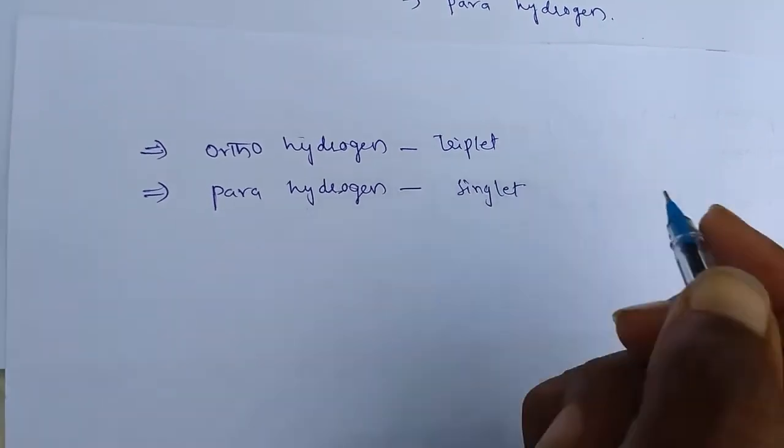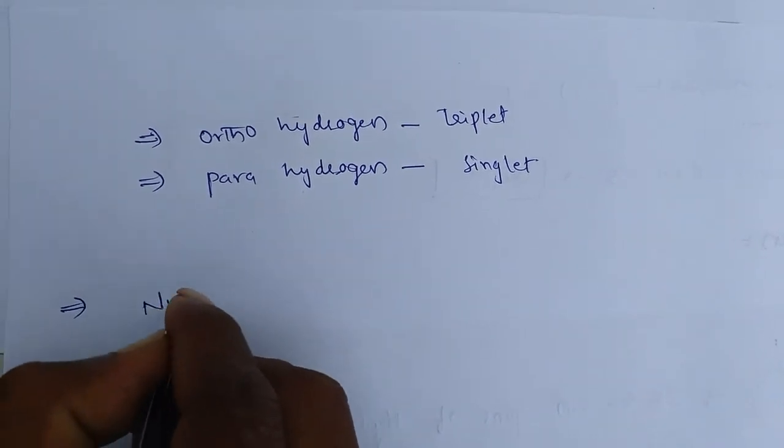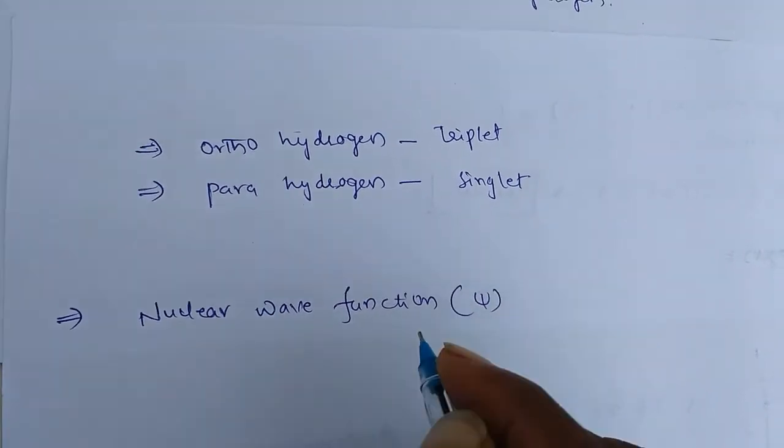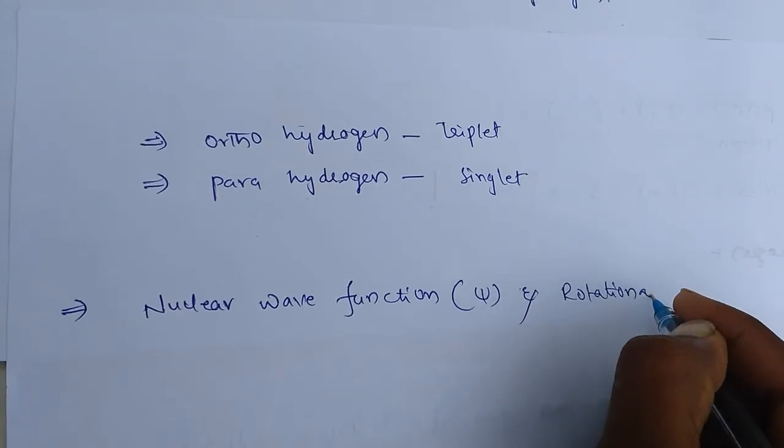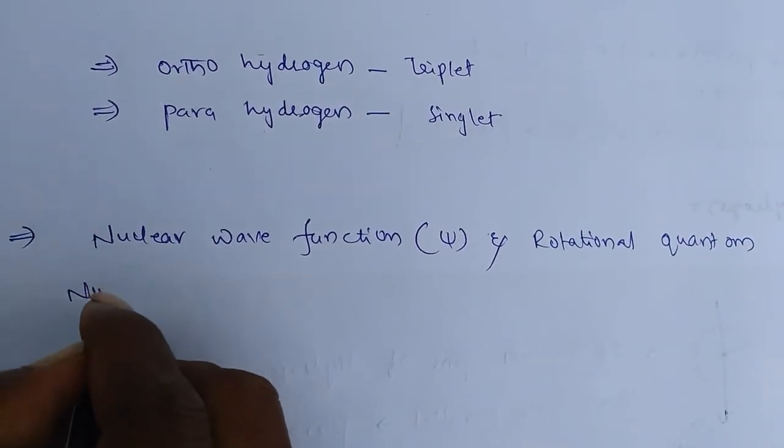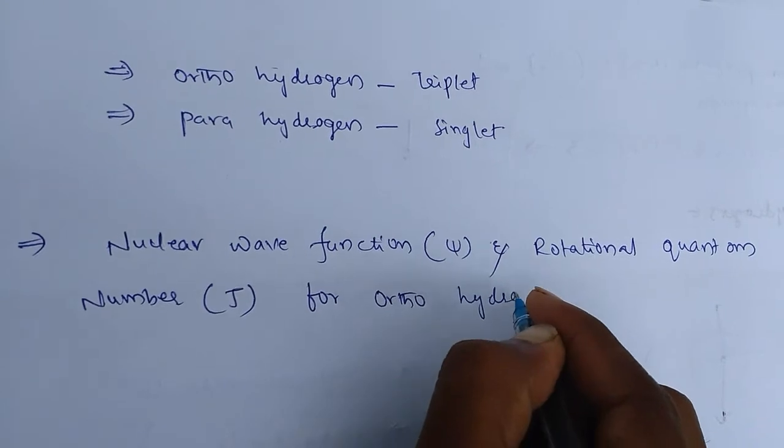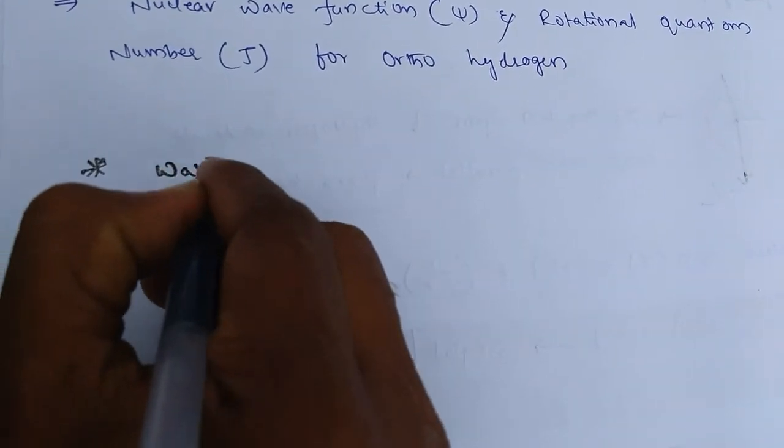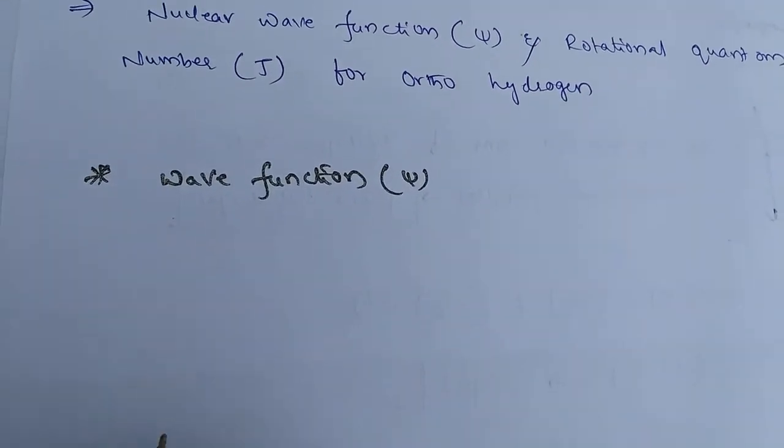Now consider our problem. So we should find nuclear wave function psi and rotational quantum number J for ortho-hydrogen. Wave function, so nuclear wave function psi. Now, so we have two isomeric forms.